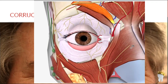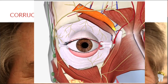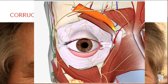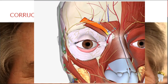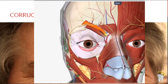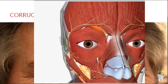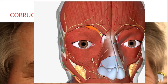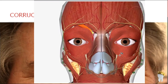Corrugator supercilii originates at the medial extent of the superciliary arch and inserts into the skin of the eyebrow. This muscle is located deep to the supramedial aspect of the orbicularis oculi — if you remove the orbicularis oculi, the corrugator supercilii is visible beneath it.